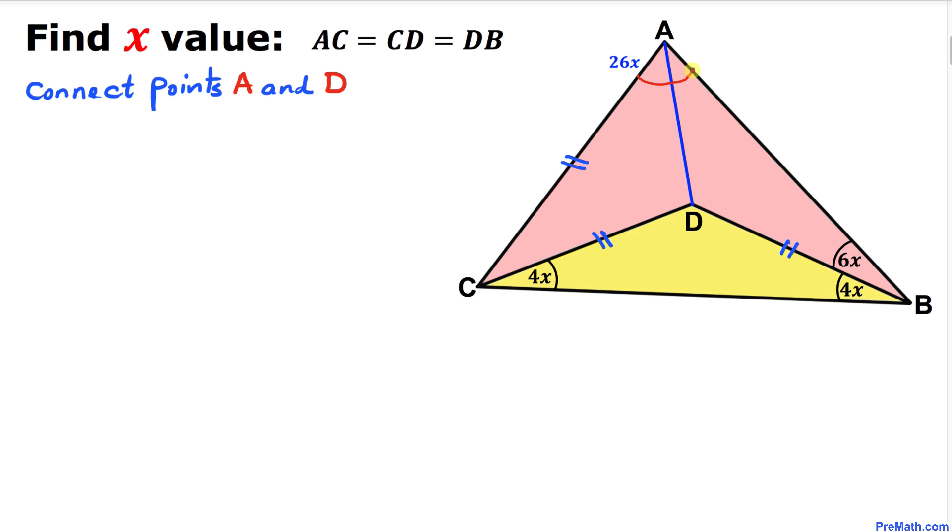We know this whole angle A is 26X. Let me go ahead and call this angle over here, this side angle I'm going to call alpha. Then this side, this angle is going to be simply 26X minus alpha.